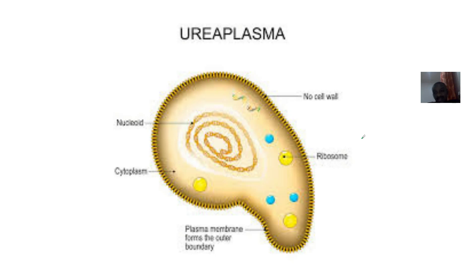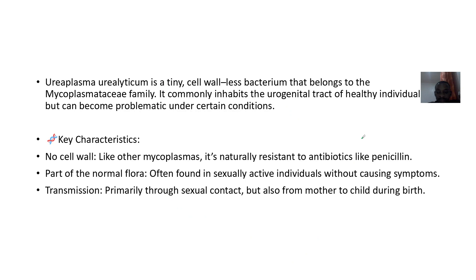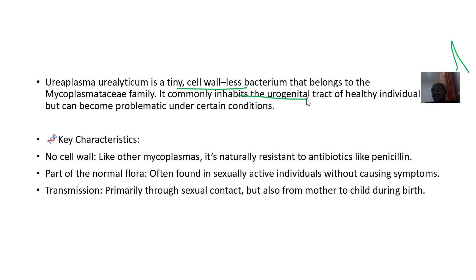There's no cell wall — you can just see a lot of the characteristics. Ureaplasma urealyticum is a tiny, cell-wall-less bacterium, meaning there's no cell wall on the bacteria, so it belongs to the family Mycoplasmataceae. It commonly inhabits the urogenital tract of healthy individuals but can become problematic — it sounds like it's a normal flora, but later on you can develop issues with it.